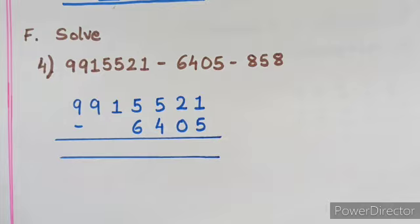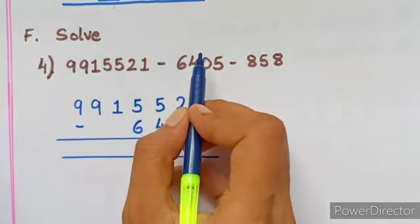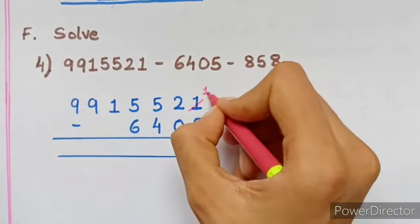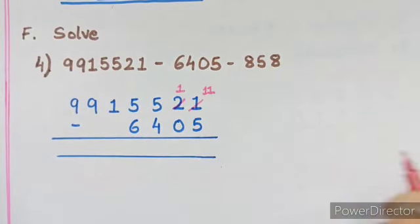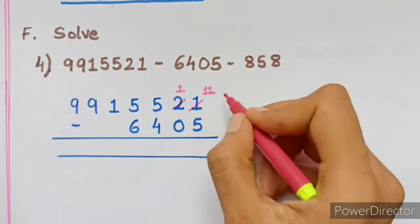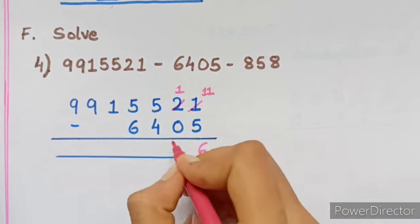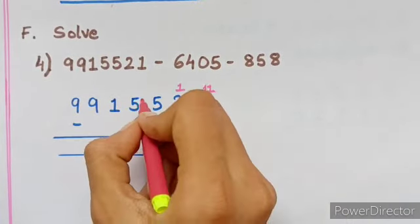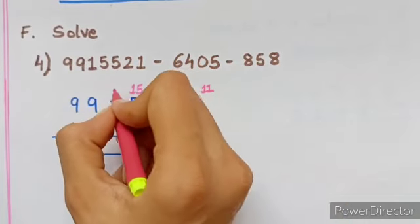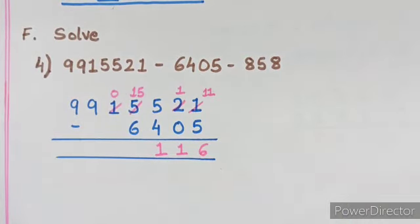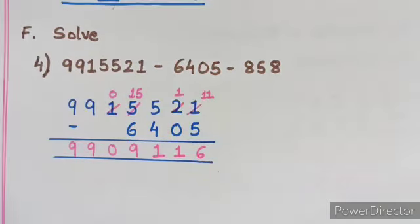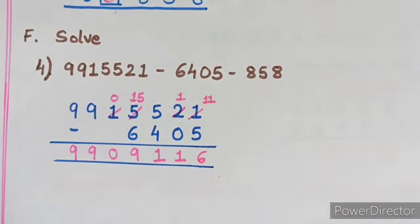Now moving on to our next question, Question F: Solve. Here you can see there are 3 numbers which are supposed to be subtracted. So first we will take these 2 numbers and arrange like this. Here 1 needs borrow, so it will be 11, and this 2 will become 1. 11 minus 5, you can count ahead of 5 till 11, it will be 6. Then 1 minus 0 is 1, 5 minus 4 is 1. Again here 5 is less than 6, so it will become 15 and this will become 0. 15 minus 6, again count ahead of 6 till 15 and you will get 9. Here 0, 9 and 9.